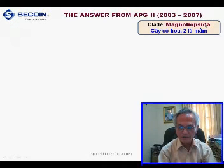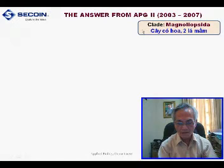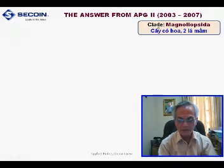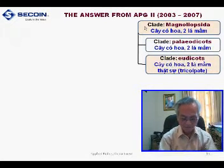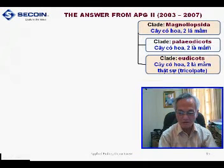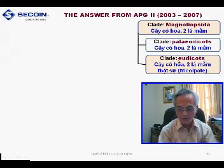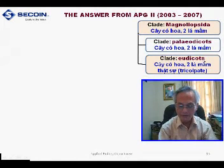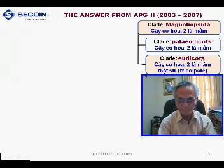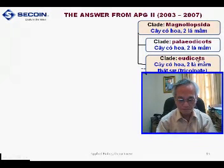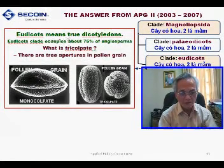Magnoliosida is a flowering plant — dicotyledon. This clade has two clades: the clade Paleodicot and the clade Eudicot. Eudicot is a flowering plant — dicotyledon, but true dicotyledon. So Eudicot means true dicotyledon.